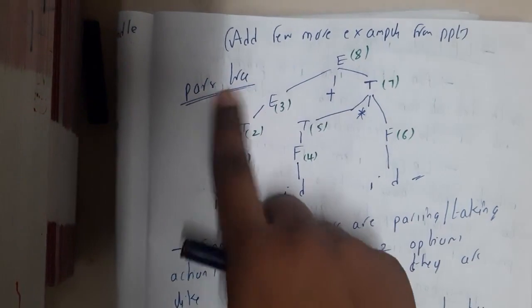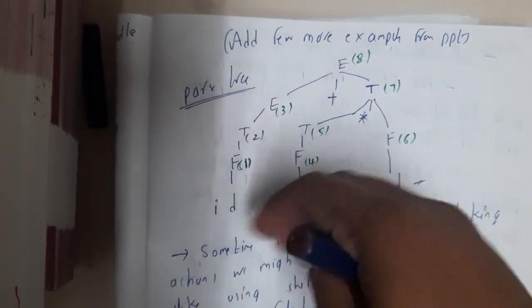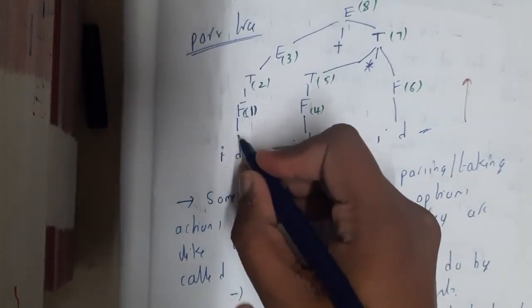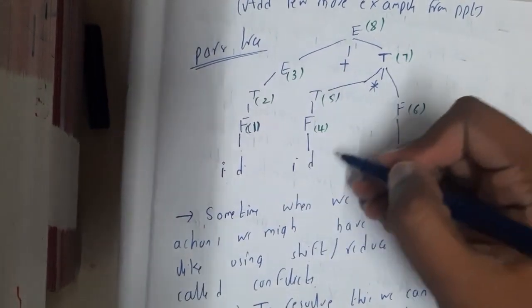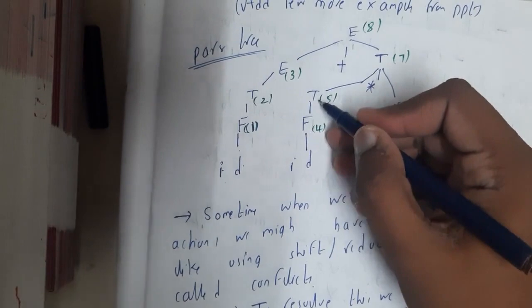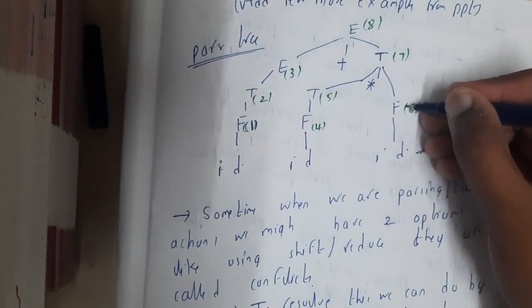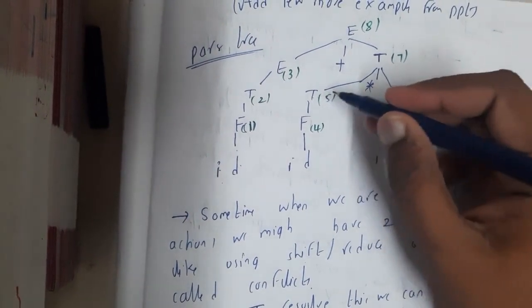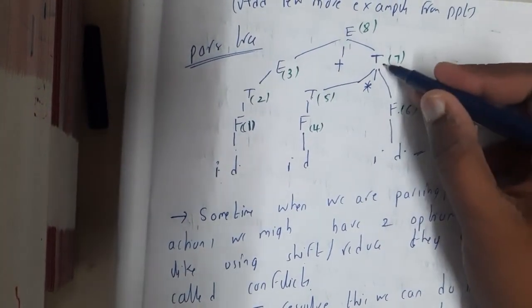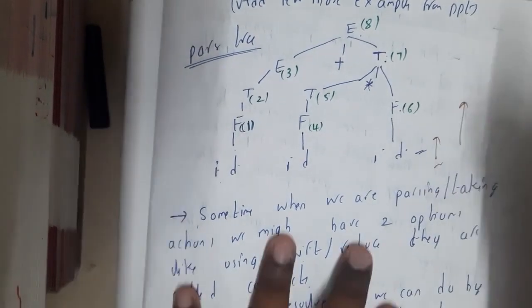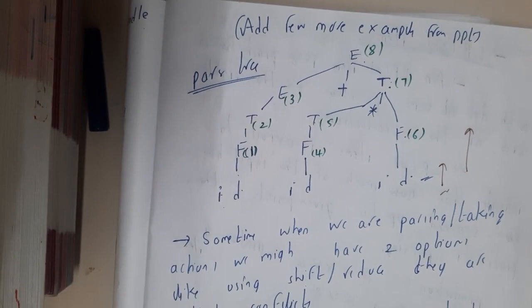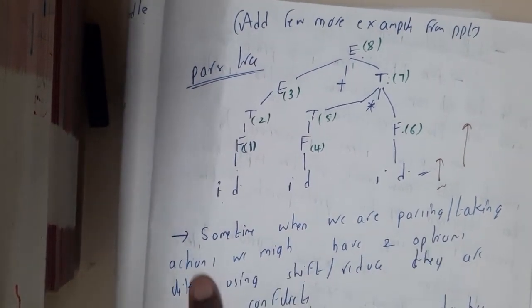If you draw this as a parse tree, coming from the bottom up: id is converted to F, F to T, T to E. Similarly the second id is converted to F, F to T. The third id is converted to F, and T*F gives T. Finally E+T gives E. That is how the bottom-up parse tree is built.